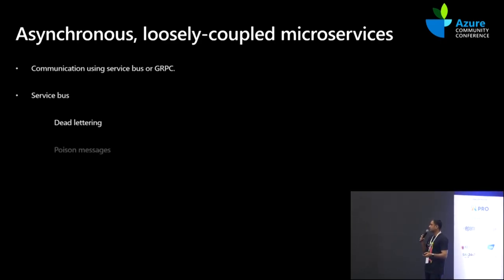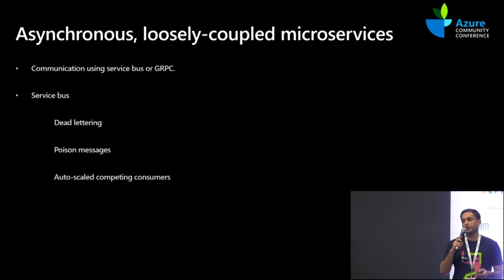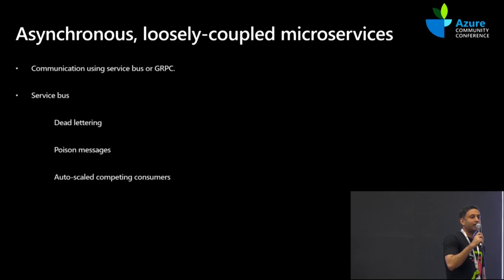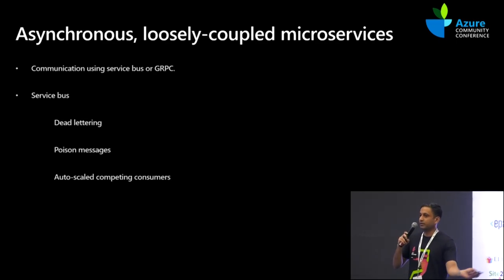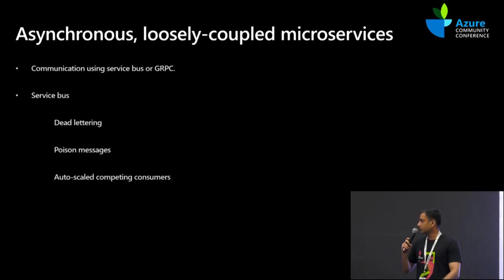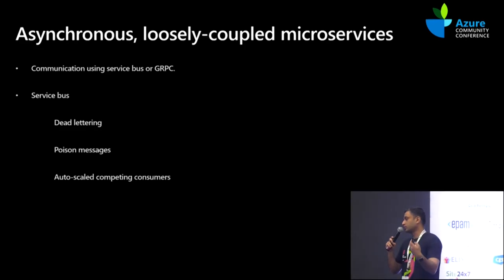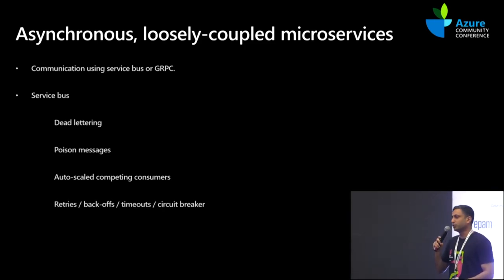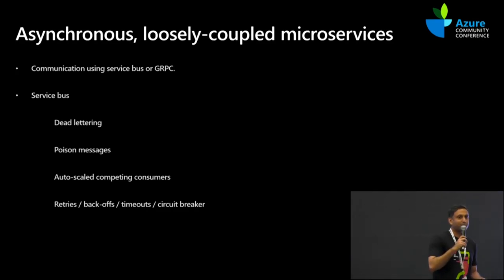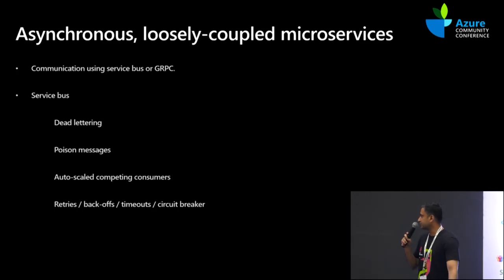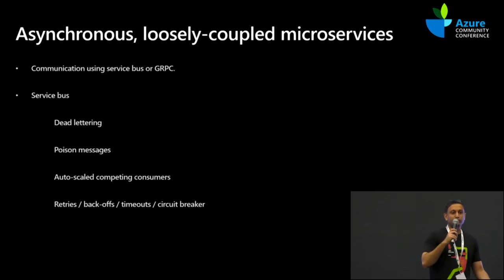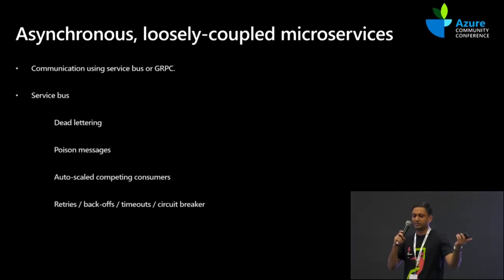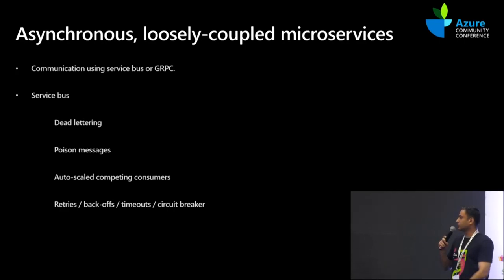Service Bus is used very heavily — it's our event stream. The advantages include dead lettering, poison message handling, and auto-scale competing consumers. When you have a burst of 50,000 requests in one second, I can scale out my listeners to drain the queue very fast. Tethering Service Bus to Azure Functions makes this pretty much a no-op — it's taken care of by the Azure Functions infrastructure. It can scale up to 32 listeners per Service Bus per app. Things like retries, backoffs, timeouts, and circuit breakers all have policies. You can use Polly, and I believe Azure Functions now has a built-in policy layer with annotations. When using the queue-based load-leveling pattern, write commits won't happen immediately — there will be some lag, so you have to be okay with eventual consistency.